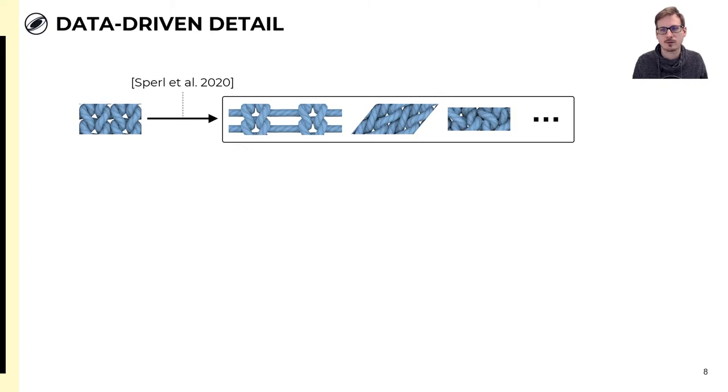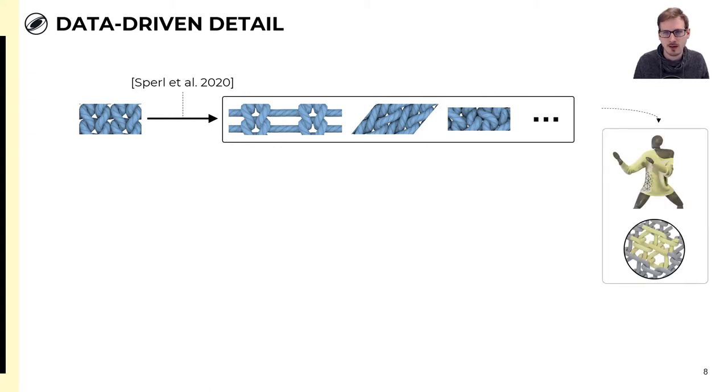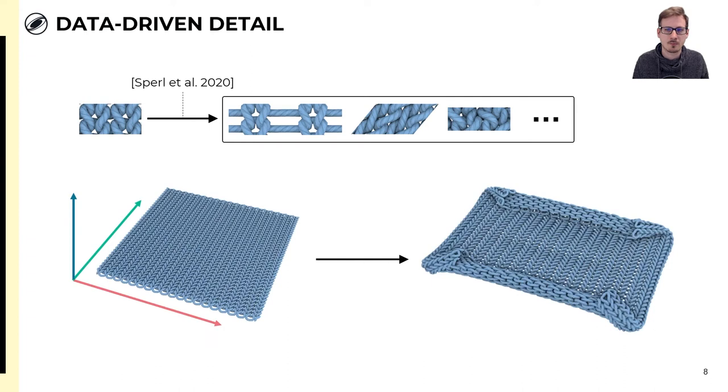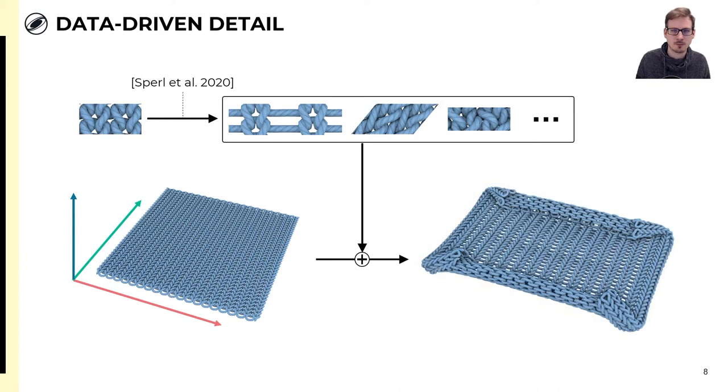We settled on a data-driven approach. With our previous method, we took periodic yarn patterns and computed how the yarns adapt locally subject to different large-scale deformations, for example by tightening. We then measured elastic energies to fit a mechanical model per pattern for mesh simulation. But this periodic pattern deformation gives us exactly those local details we want, and we can instead store the deformed yarn geometry itself. Now we can combine this with embedded mapping by interpolating and adding the pre-computed local detail depending on the cloth deformation, which makes the embedded approach mechanics-aware.